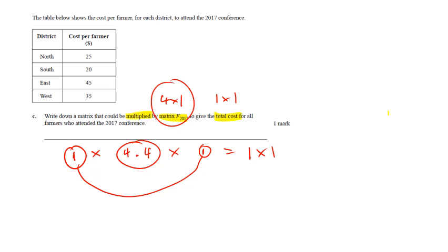So logically this must be F2017 and these numbers must fit into a one by four. Currently they are vertically, they are four by one, right? So to get this whole thing to work so that we end up with a one by one total answer, it's gonna be a one by four. So we get one row which is 25, 20, 45, 35.